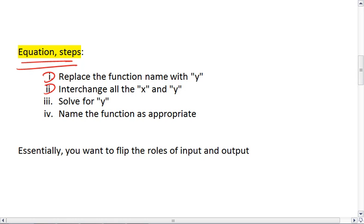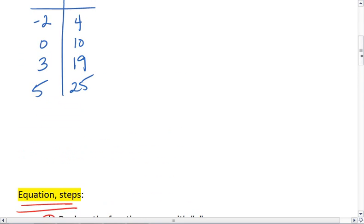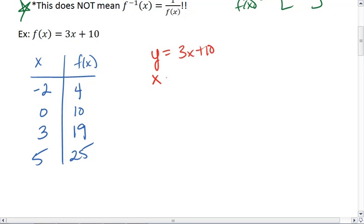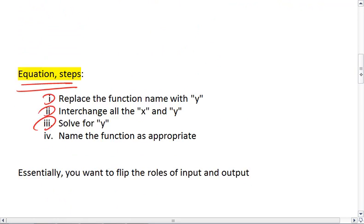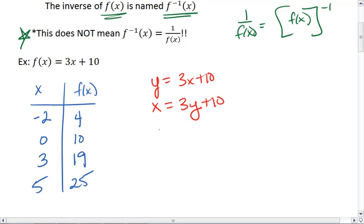Next, we want to interchange all the x and y's. So we come up here. We now write x equals 3y plus 10. Solve for y. We get 3y equals x minus 10. Y equals x minus 10 over 3.